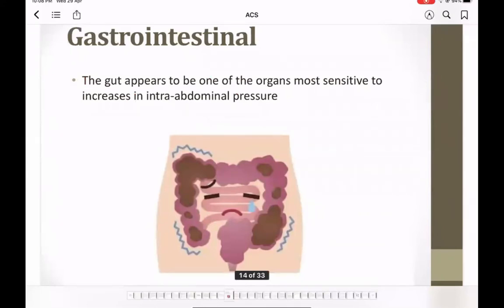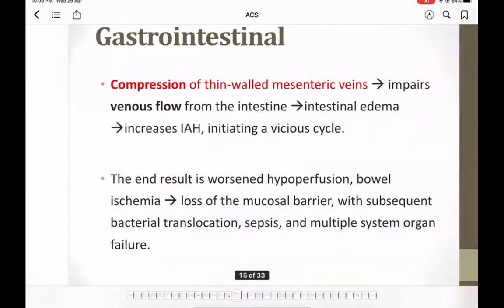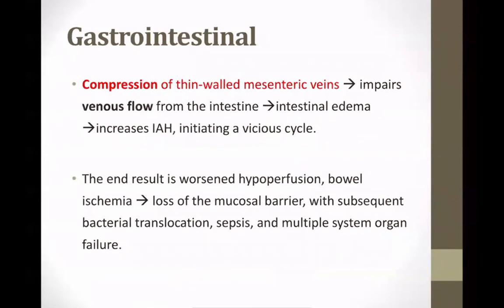The GI tract is thought to be the most sensitive organ to ACS. Logically, we're talking about an organ contained within that compartment, so a sustained elevation of pressure will directly affect it. Direct compression on the mesenteric veins impairs venous flow, leading to intestinal edema and further elevation in intra-abdominal pressure.